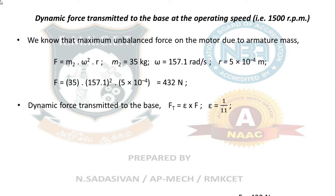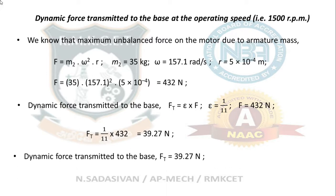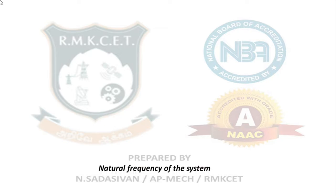So epsilon is 1/11, this is 432, multiply them. You will get 39.27 Newton is the force transmitted to the foundation at 1500 rpm. So dynamic force transmitted to the base F_t equals 39.27 Newton.